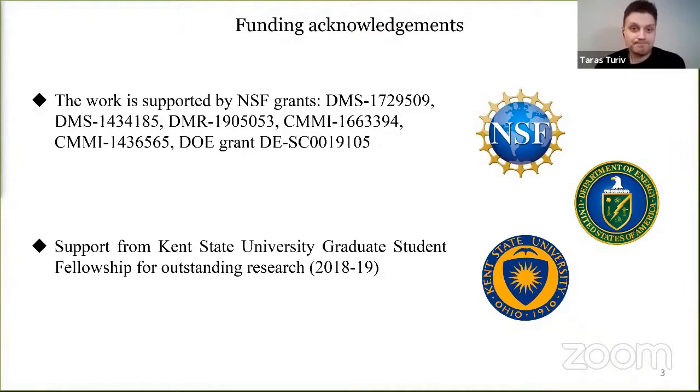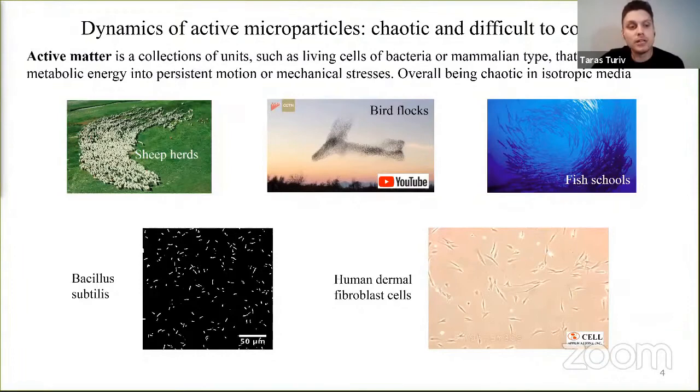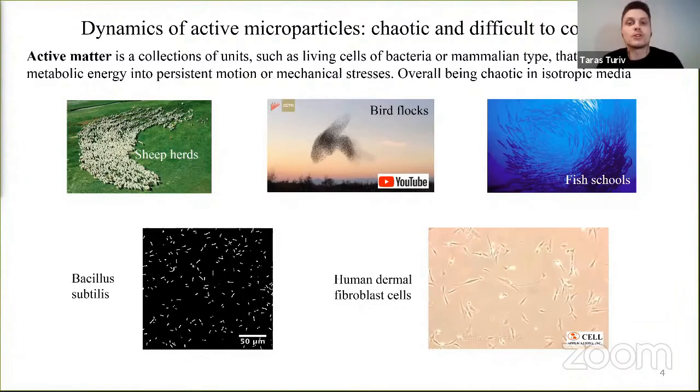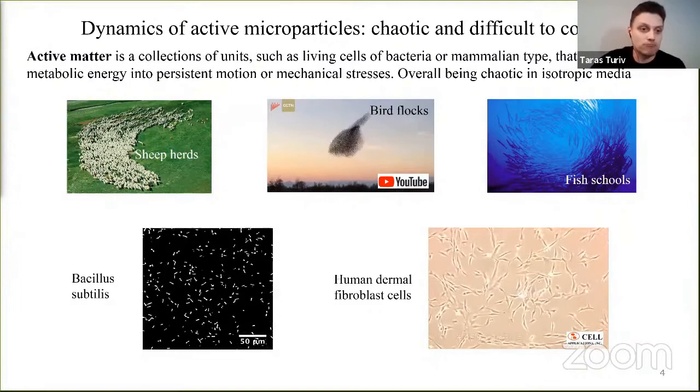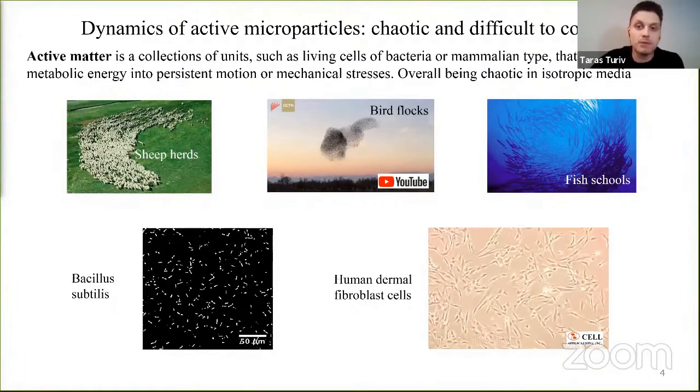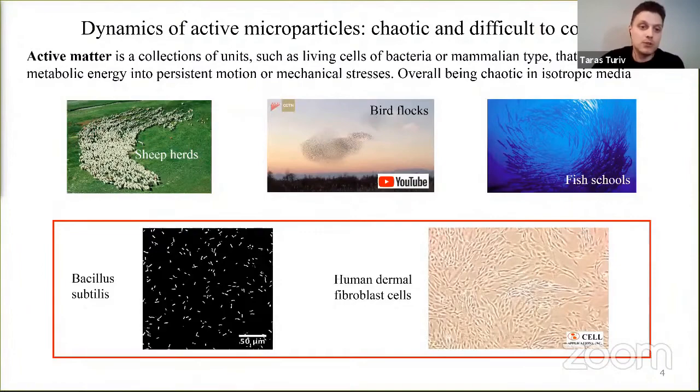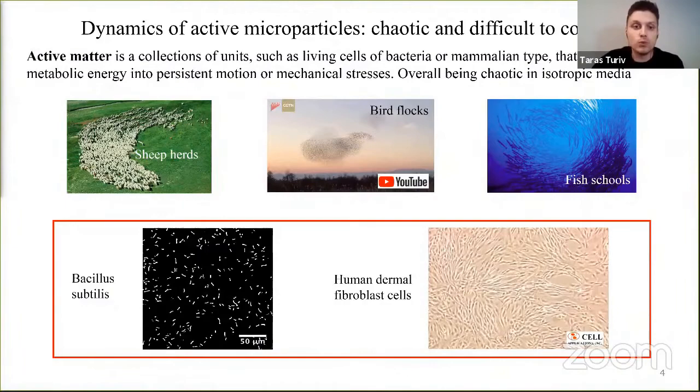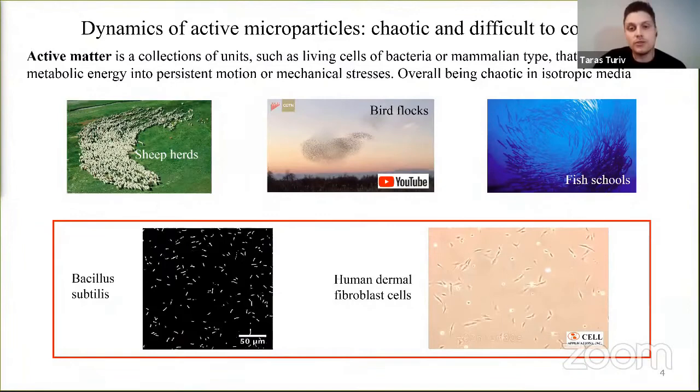So, what is active matter? Yeah, in general, it's a collection of live or inanimate units that convert internal metabolic energy or external energy in order to move or exert mechanical forces. And these systems are inherently out of equilibrium. And there are many examples of those in the nature.